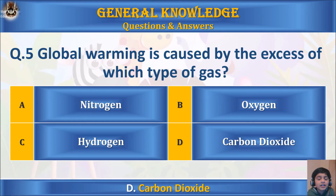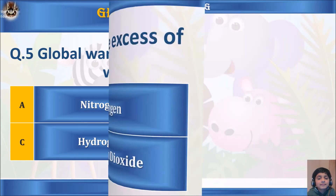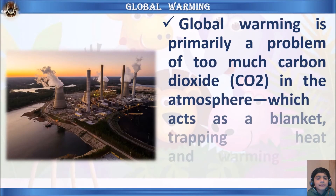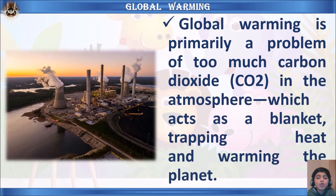The answer is D) carbon dioxide. Global warming is primarily a problem of too much carbon dioxide, CO2, in the atmosphere, which acts as a blanket, trapping heat and warming the planet.